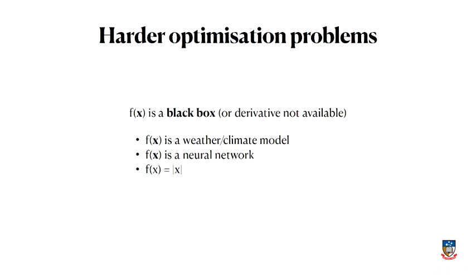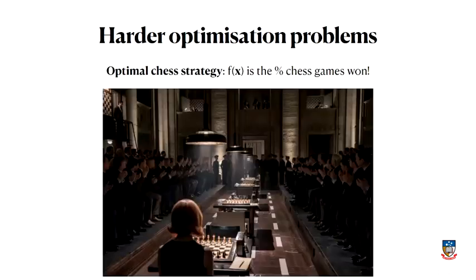Take the absolute value of x — it looks like a little V-shape. At the point x = 0, the absolute value of x is not differentiable, so you can't differentiate it and set that equal to zero to formally solve the optimization. This situation — non-differentiable functions — is actually very common, and we'll talk about how to handle optimization in these cases.